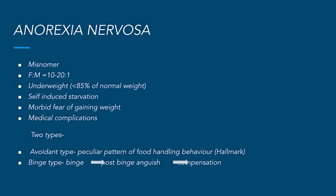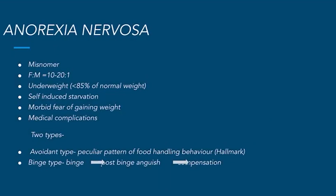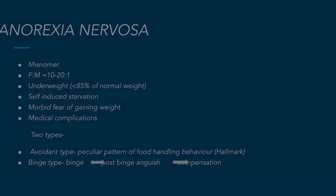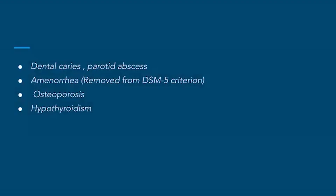To understand the crux of the disease, you need to understand three points: self-induced starvation, morbid fear of gaining weight leading to preoccupation with body image, and medical complications due to self-induced starvation. There are two types: the avoidant type, with a peculiar pattern of food handling where patients avoid normal diet, and the binge type.